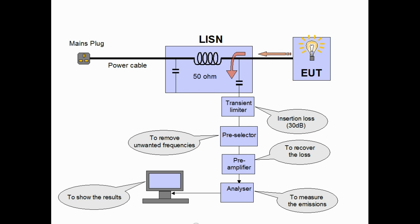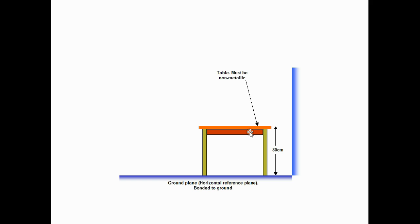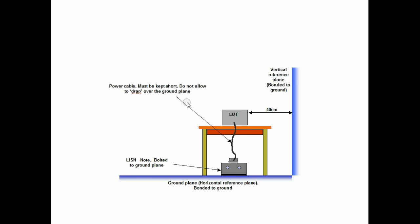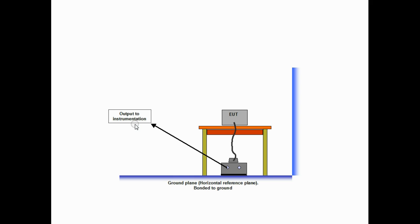So this is the setup. Now the standards define exactly how we set this up physically. They define a wooden table or at least a non-metallic table. No ground plane on top of the table but we do have a ground plane or horizontal reference plane on the floor. We bolt the LISN to this ground plane. It's bolted down to make sure we get good bonding to the ground plane and the product is put onto the table connected by a short mains cable to the LISN. The cable should be just long enough. Excessive length does not help. Finally, we take the output from the LISN to our instrumentation.